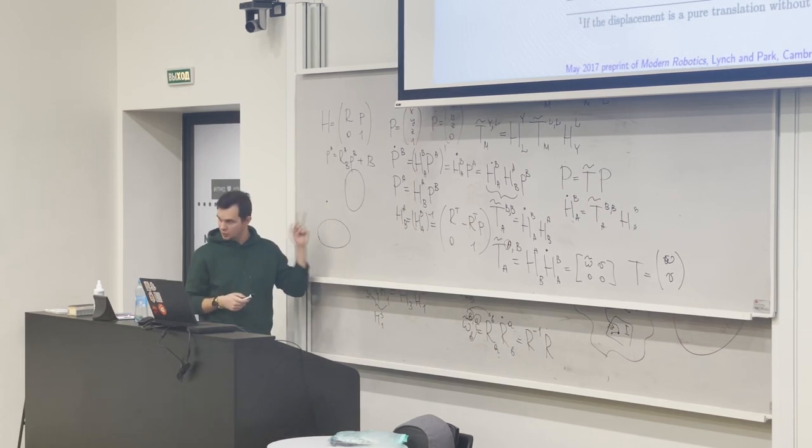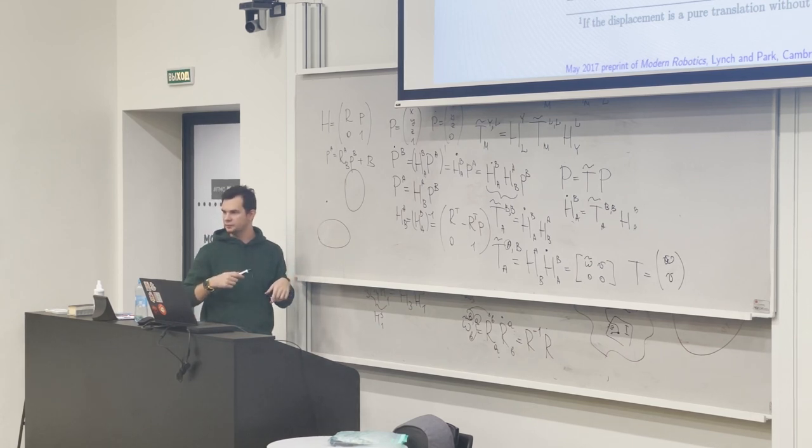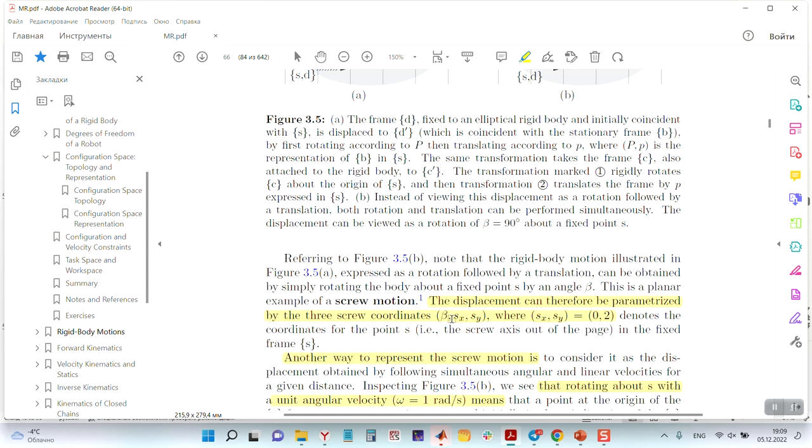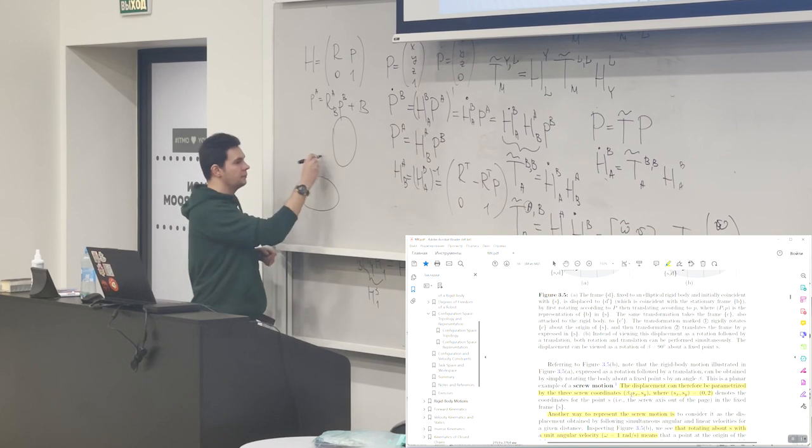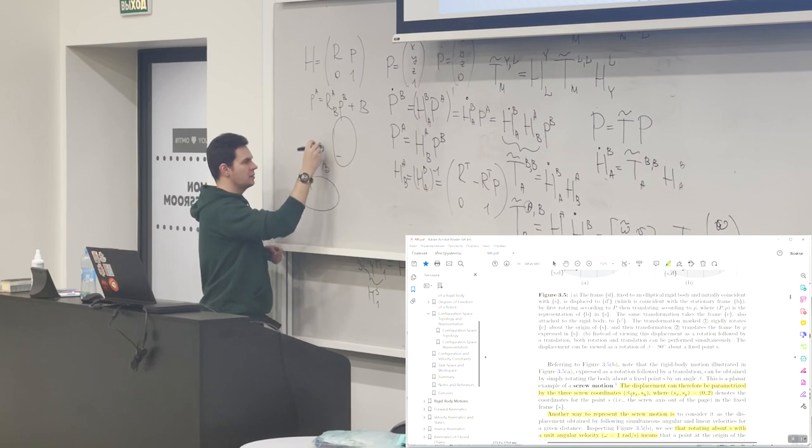And since it's planar case, it looks like just rotation. But in order to describe this kind of motion, I need just to denote where the axis of rotation and what is the angle of velocity. So the displacement can be therefore parameterized by three coordinates: the angle and the coordinates of this point as x and y.